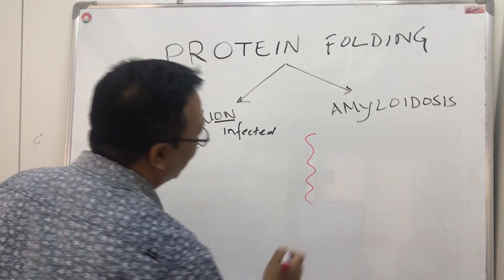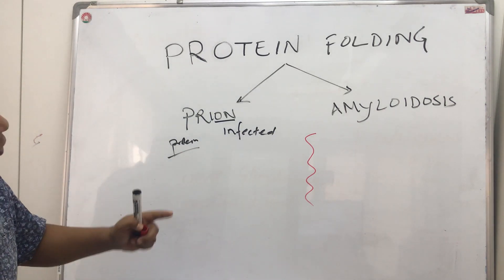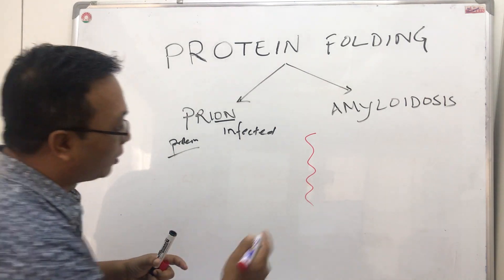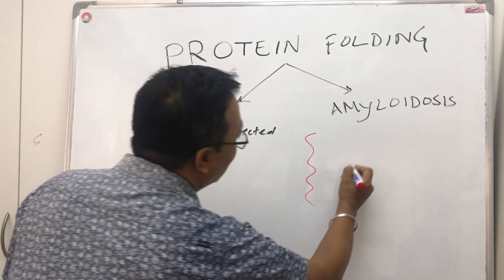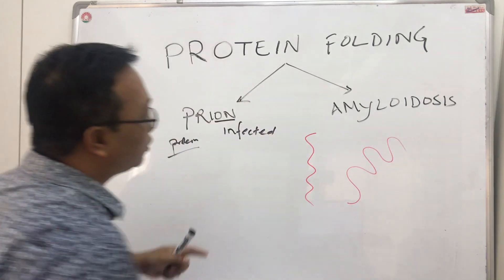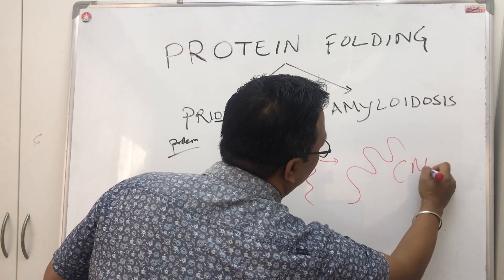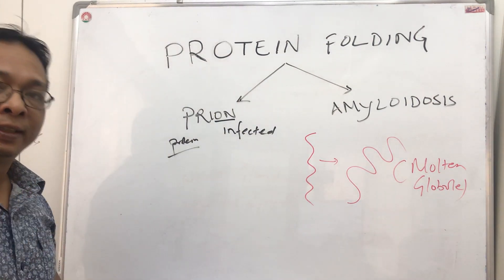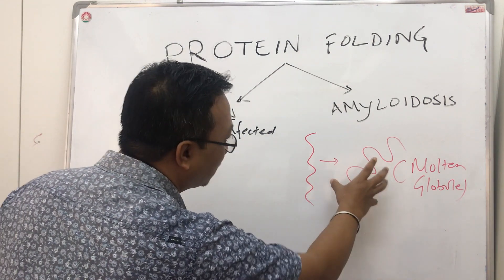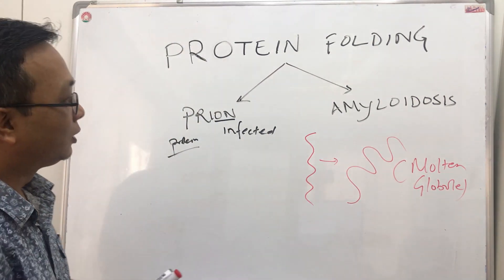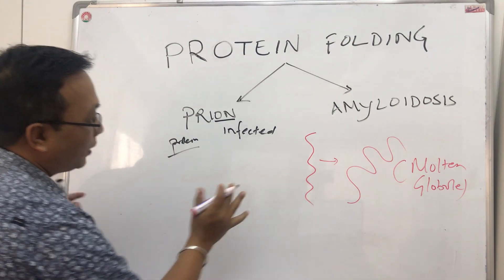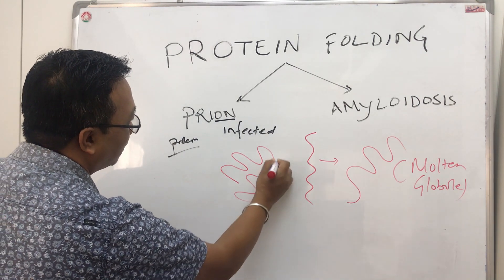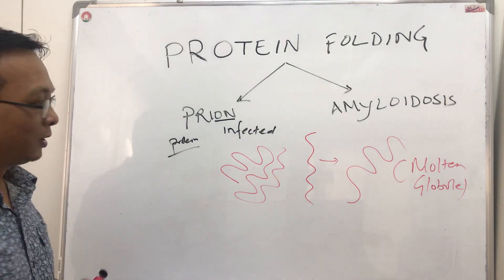When a protein is first formed out of ribosomes, it is a partially folded structure. As more of the protein is synthesized and matures, it folds further into what is called a molten globule. To become a biologically active protein, it must be folded in a more appropriate manner.